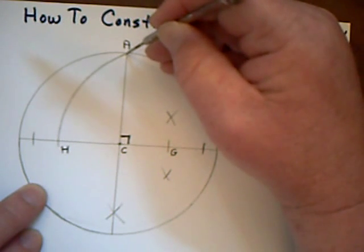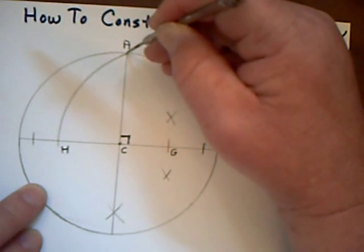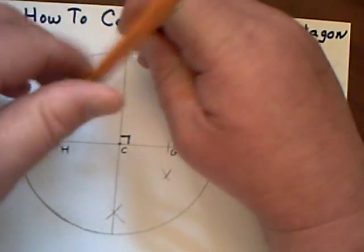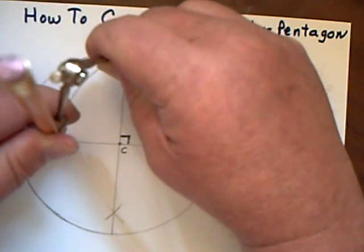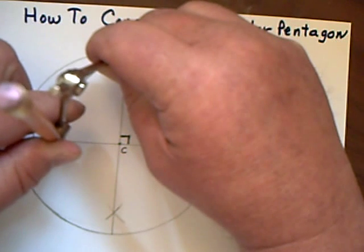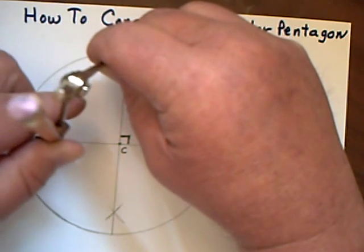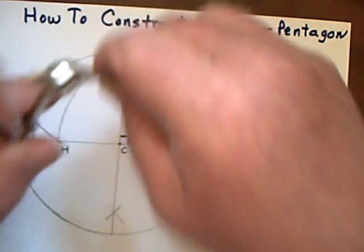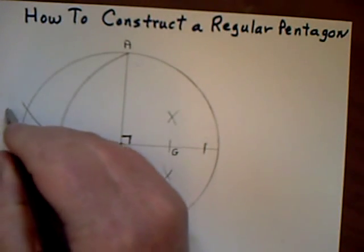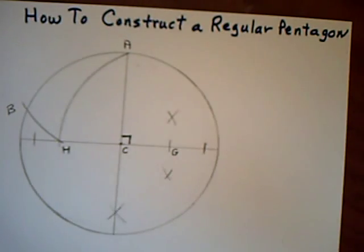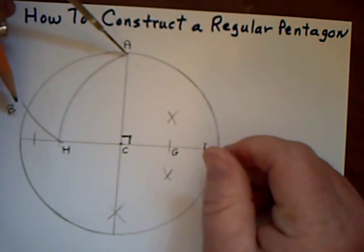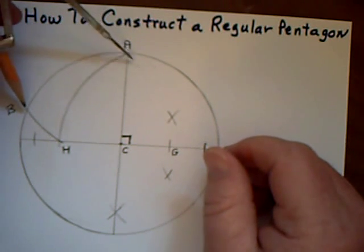Now I go to point A with my compass point, and measure how far it is from A to H. And I draw an arc that goes out to the circle, and meets at point B. That arc, I now am going to recreate five times around the circle. That's the length of each side.